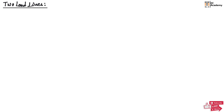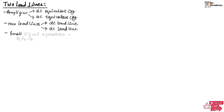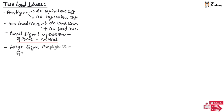Every amplifier has a DC equivalent circuit and an AC equivalent circuit. Hence, it has two load lines: DC load line and AC load line. For a small signal operation, the location of the Q point is critical. But for large signal amplifiers, the Q point has to be at the center of the load line.